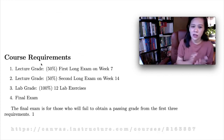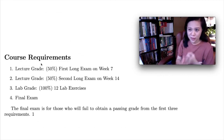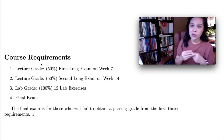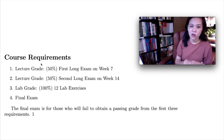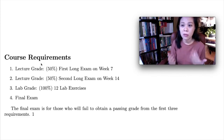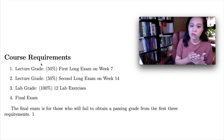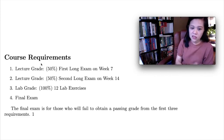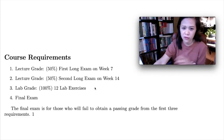The course requirements are basically three. The fourth one is optional. For your lecture grade — which you can think of as 3 over 4 of your grade — 50% of that grade will come from your score from the first long exam, and the second half will come from the second long exam on week 14. For your lab grade, it is composed of your scores from 12 lab exercises. The final exam is only for those who fail to obtain a passing grade from the first three requirements — you can think of it as a removal exam.